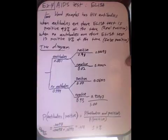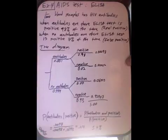The numerator — the probability that both happen — is our top branch of our tree diagram: .00098. The denominator is a little bit complicated, because there are two ways you can get a positive result: with antibodies and without. So that's an or, and so we add. Dividing, we find that the chances of having antibodies when you have a positive result are only .014, or 1.4%. And actually, if you were to calculate the chances that you don't have antibodies given a positive result, you would get the complement of that — 98.6%.